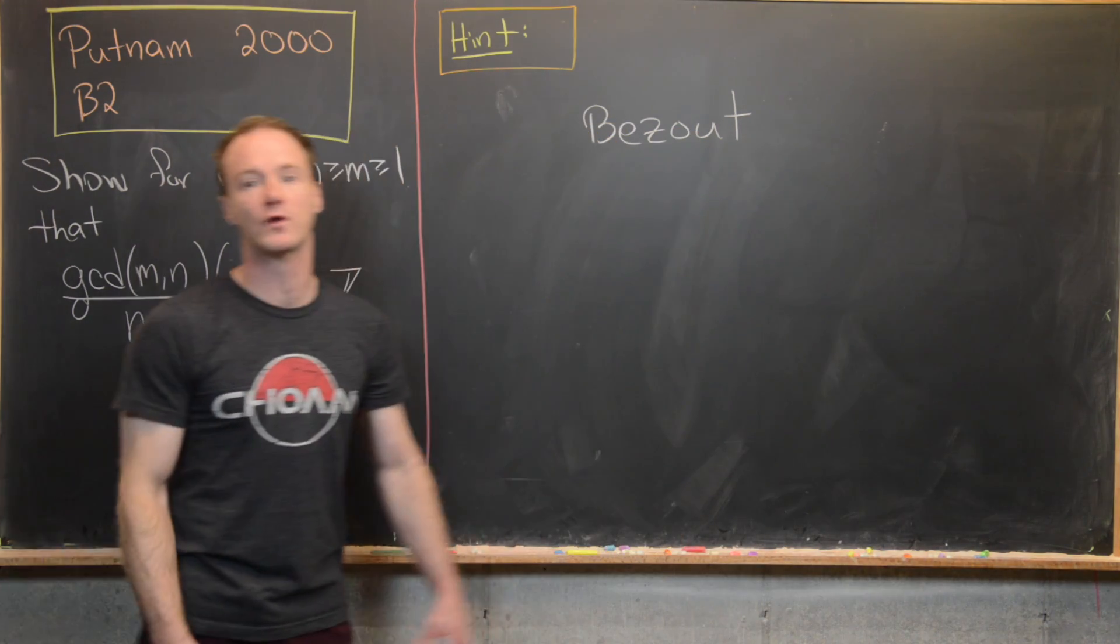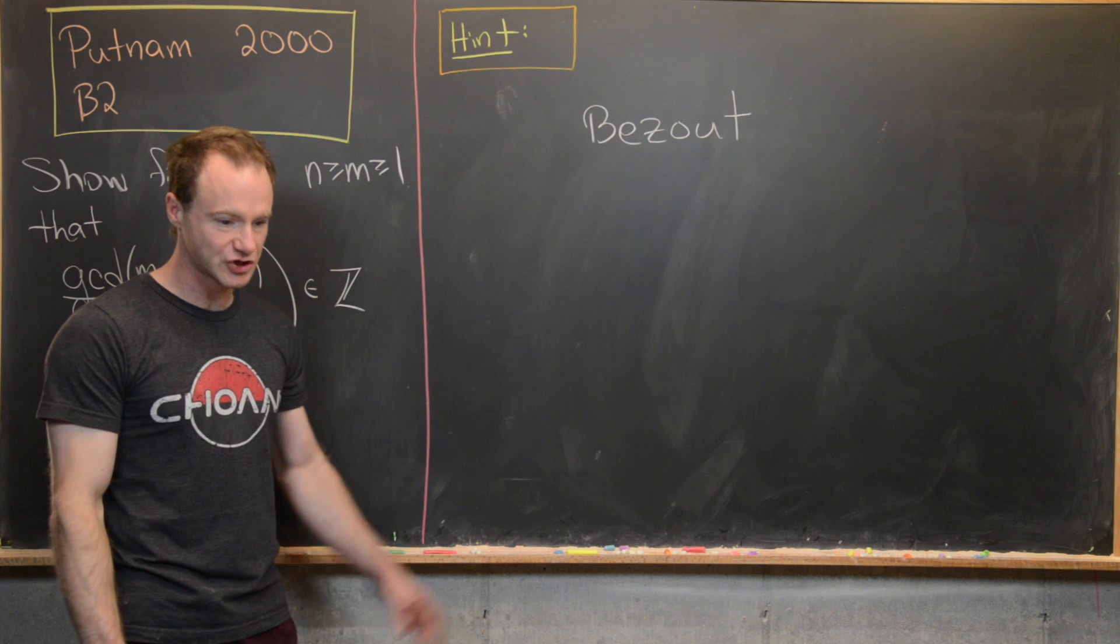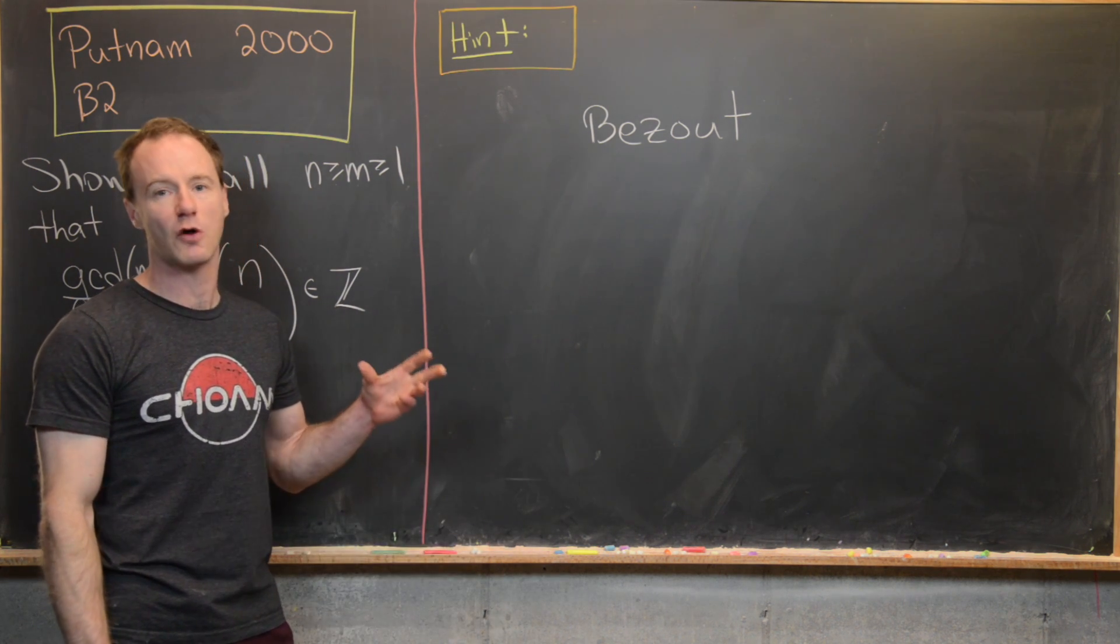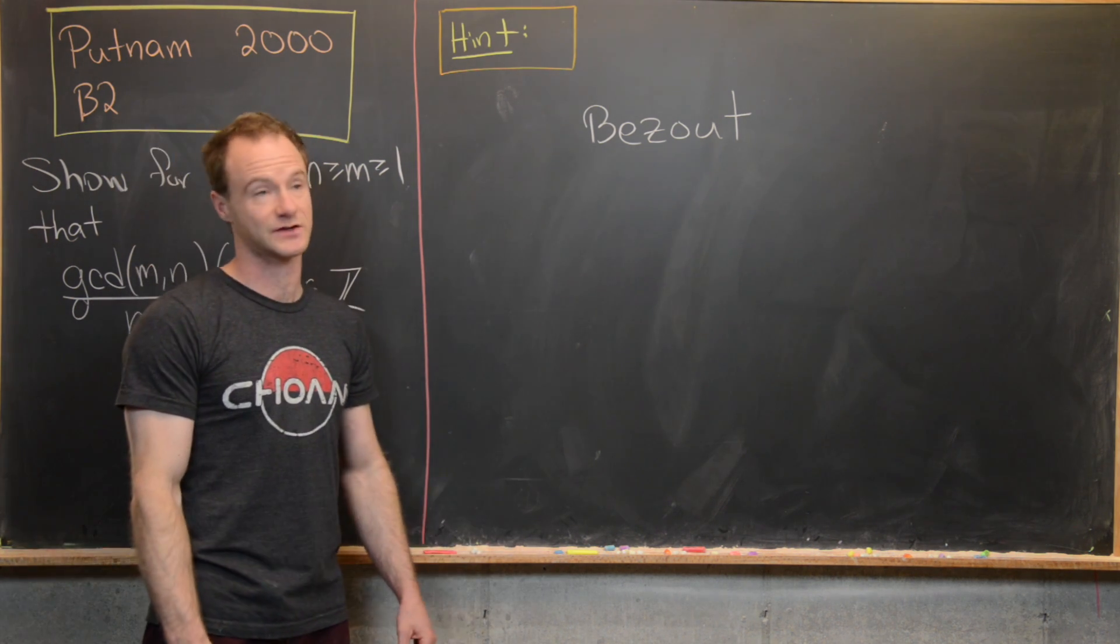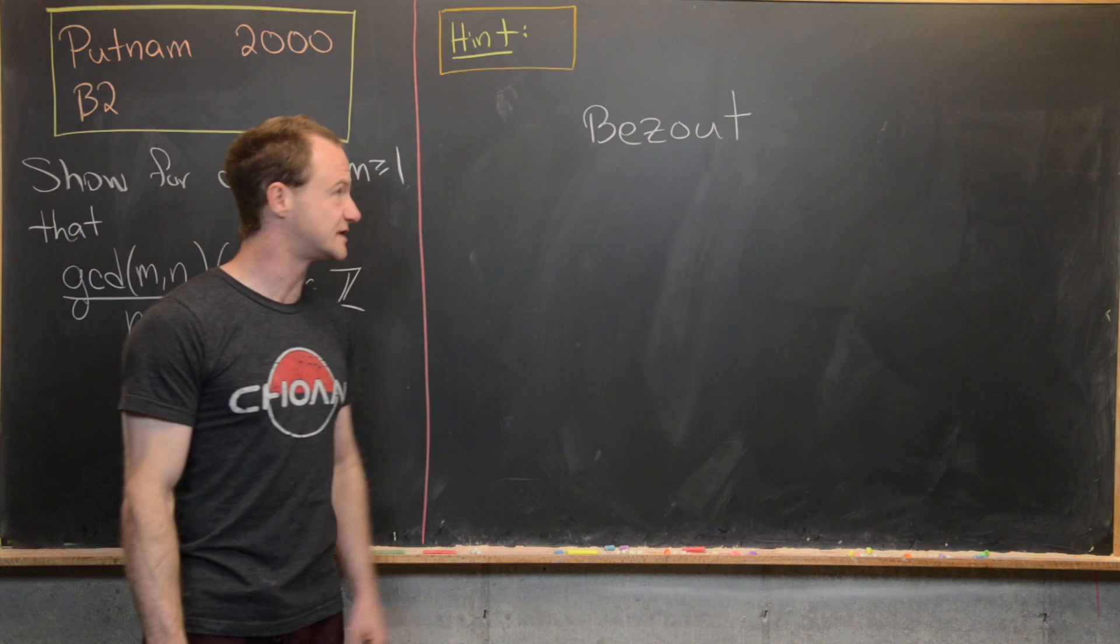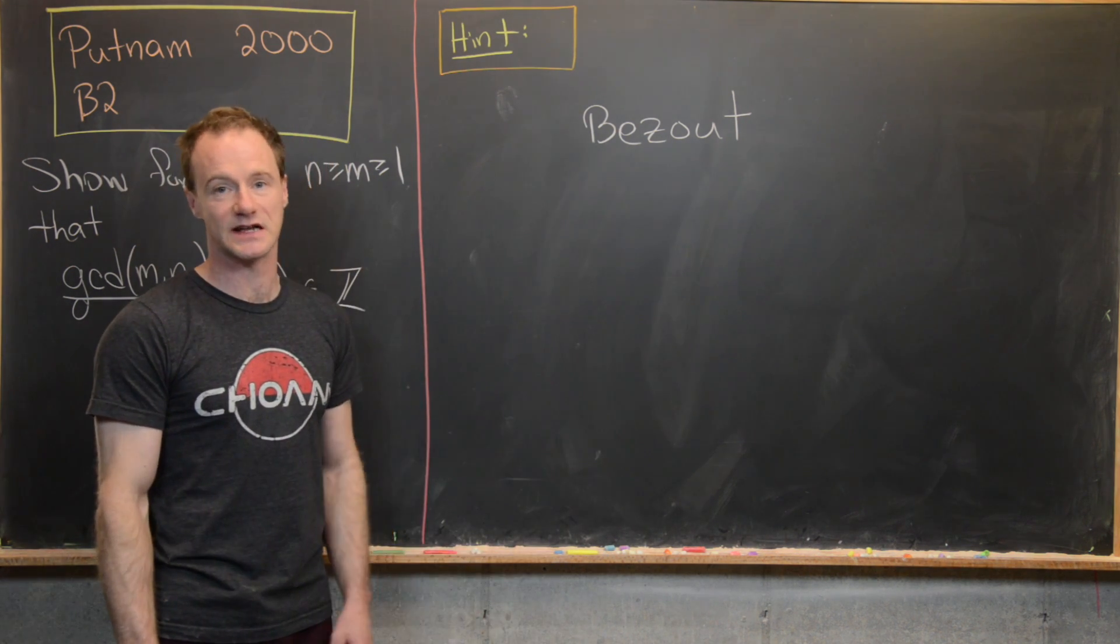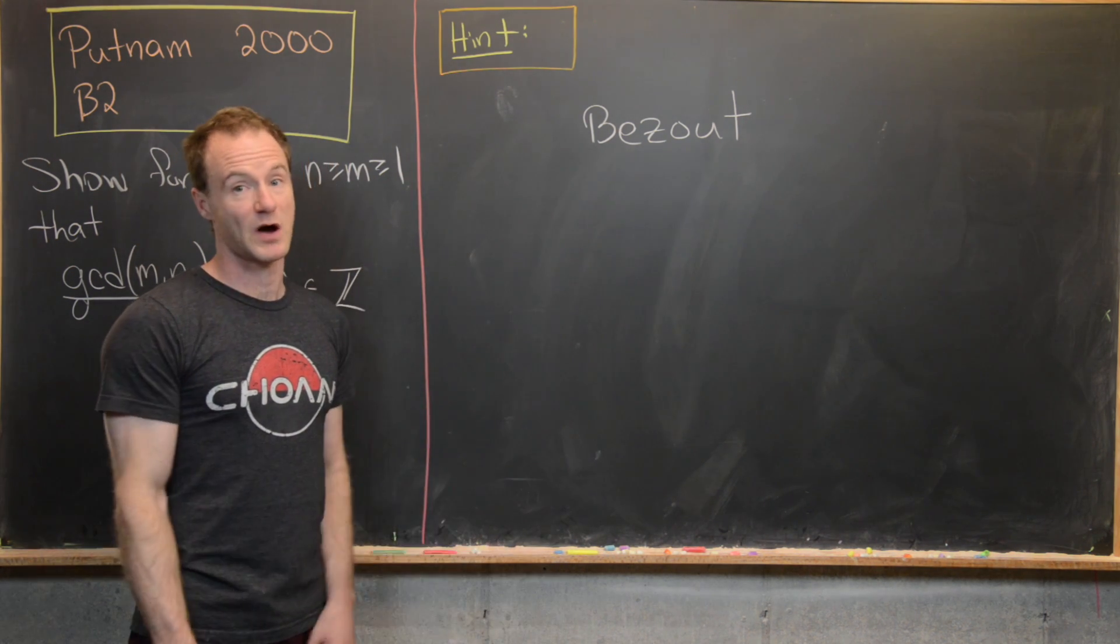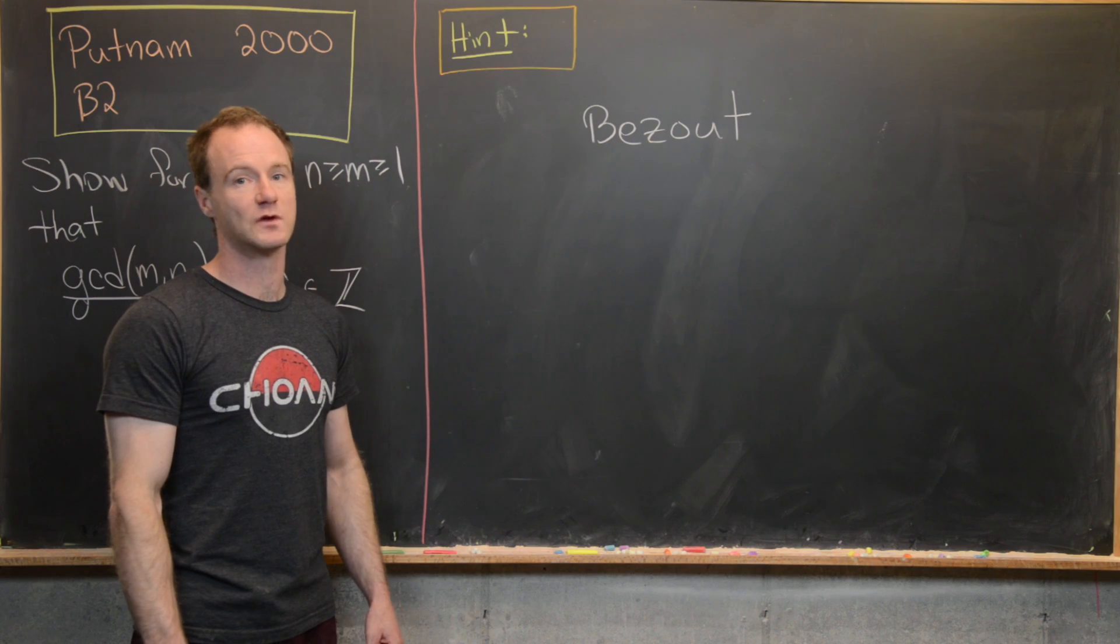I'm going to give you guys one really quick hint before we look at a solution because this hint will take you almost all the way to the answer. And that hint is to use something called Bezout's identity. So maybe pause the video, give that hint a go, and then we'll look at a solution.